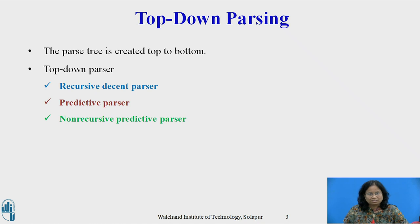In Top-Down Parsing, the parse tree is created top to bottom. The following are examples of Top-Down Parsers: Recursive Descent Parser, Predictive Parser, and the Non-Recursive Predictive Parser. In this video, I am going to cover the Recursive Descent Parser and the Predictive Parser.